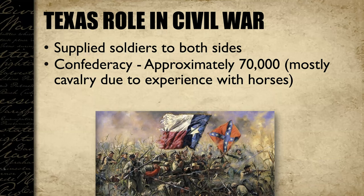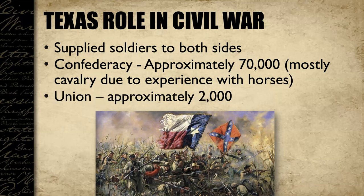Texas supplied soldiers to both sides. There were many people in Texas who did not support secession and did not want to join the Confederacy. Approximately 2,000 Texas men traveled east and joined the Union Army, meaning they fought for the United States against their friends, neighbors, and brothers in the Confederacy.